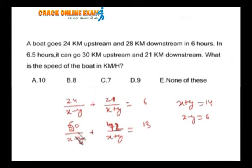Pretty clear. In this case, we need the speed of the boat, that means the value of x. That is 14 plus 6, 20 by 2, 10 kilometers per hour.